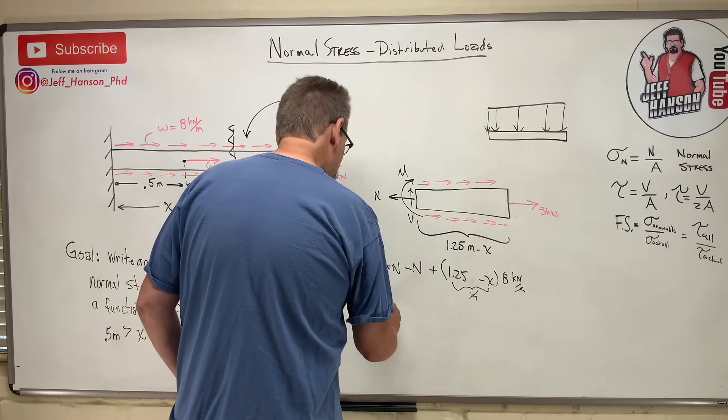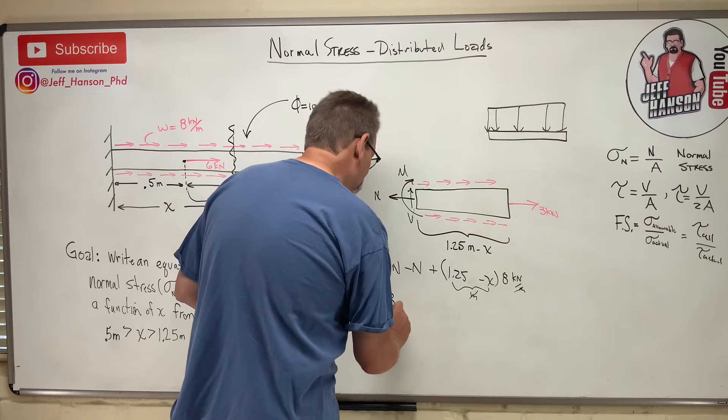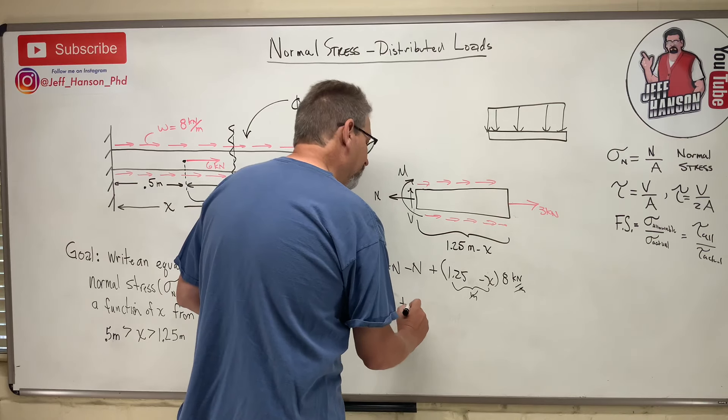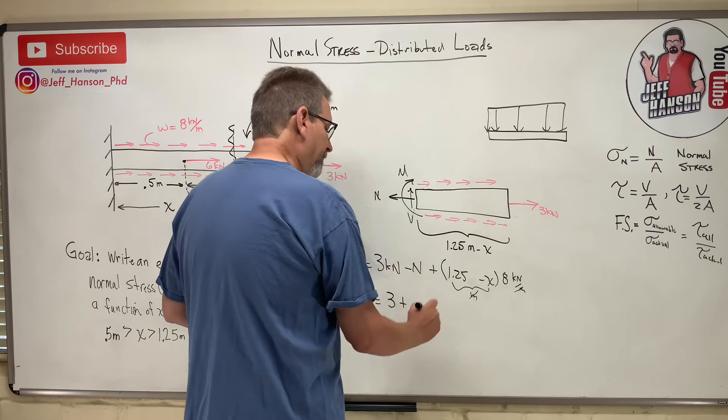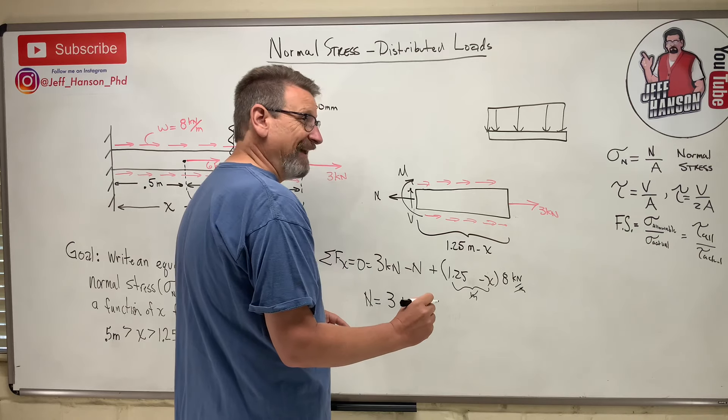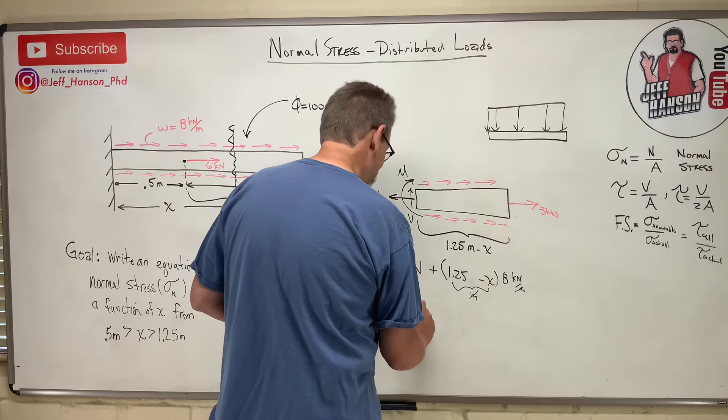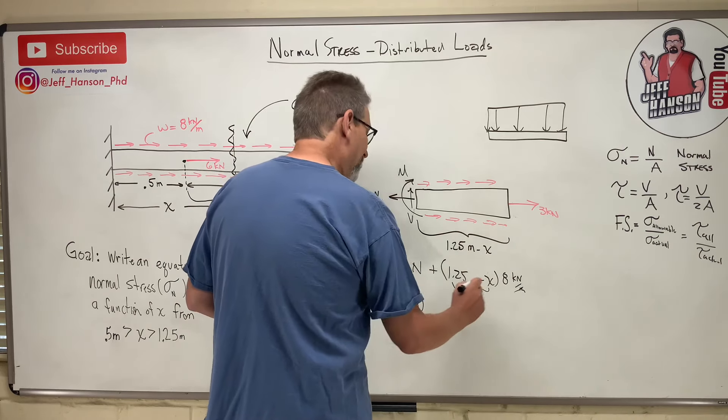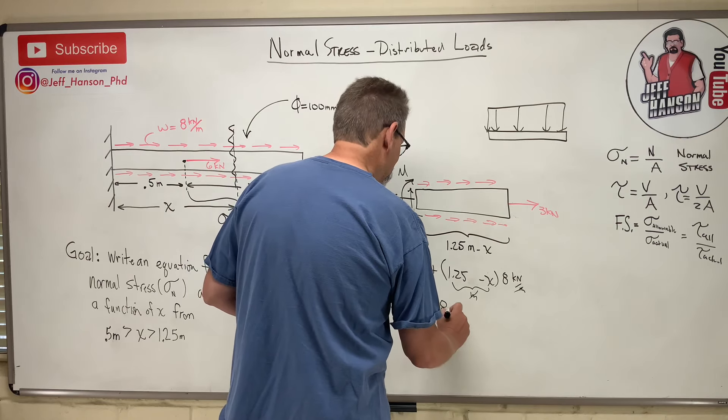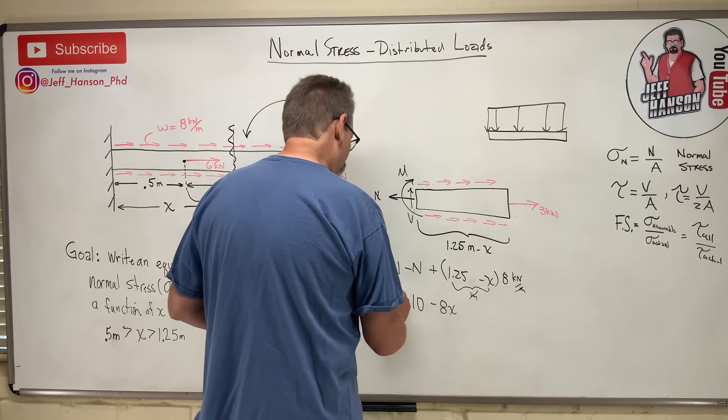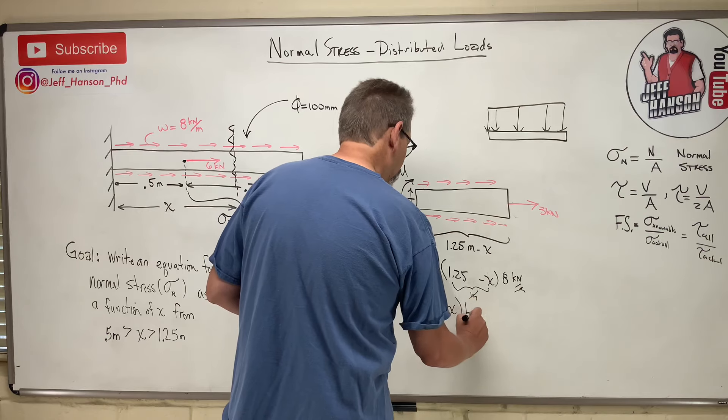So move the n to the other side. n is equal to 3 plus 8 times 1.25. A quarter of 8 is 2, so that's 10, minus 8x. And that whole thing is kilonewtons, right?